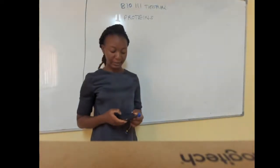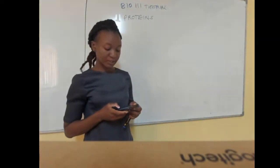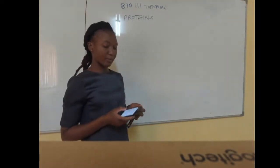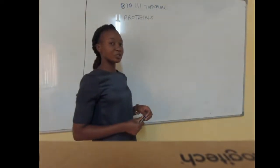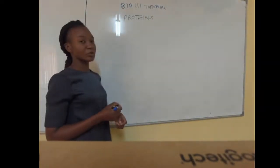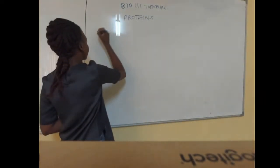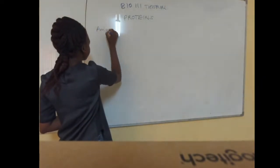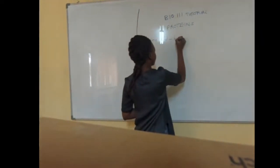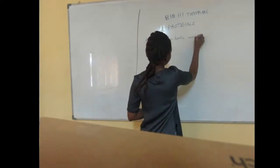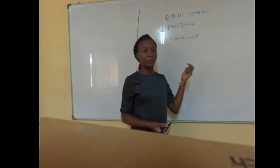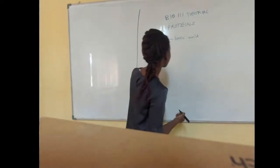Our first question for today is: illustrate the general formula of amino acids and state the functional groups present in all amino acids. I've been told to illustrate the general formula for amino acids — a formula that should be able to represent all amino acids. An amino acid is a basic unit from which proteins are made.